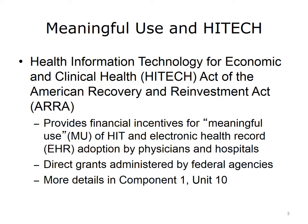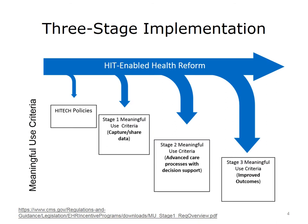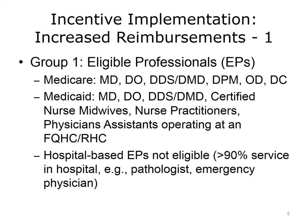More details about HITECH and the Meaningful Use program are provided in Component 1, Unit 10. The overall plan for implementing Meaningful Use was that it would be done in three stages, all as part of the health IT-enabled health care reform. Stage 1 would focus on the capturing and sharing of data. Stage 2 would focus on advanced care processes with decision support, while the goal of Stage 3 will be to focus on improved outcomes. The details of Stage 3 have not yet been finalized.